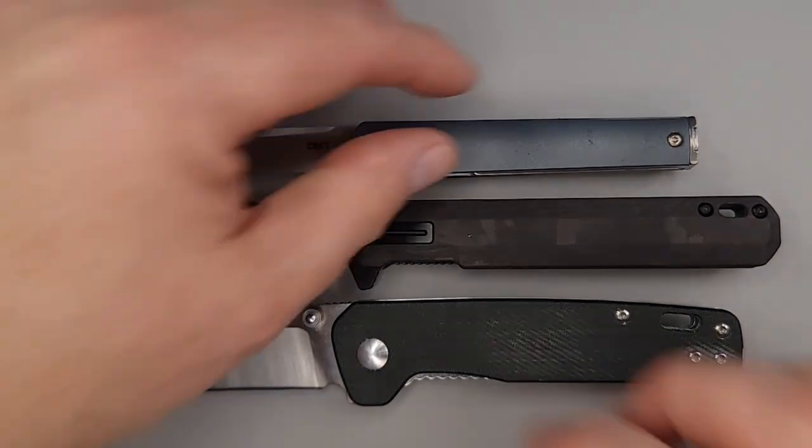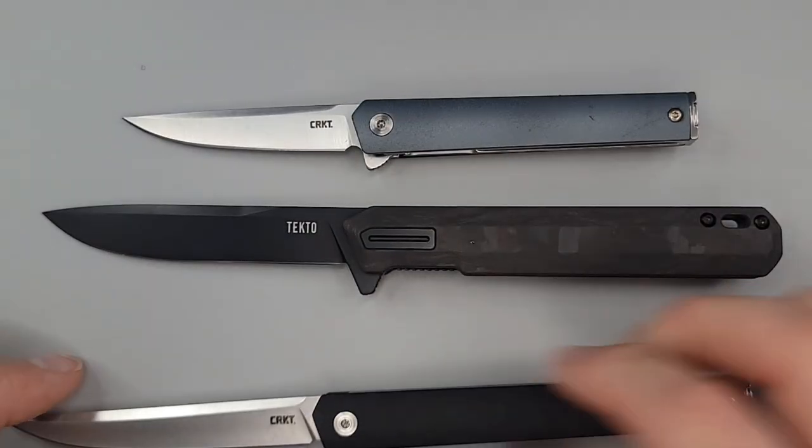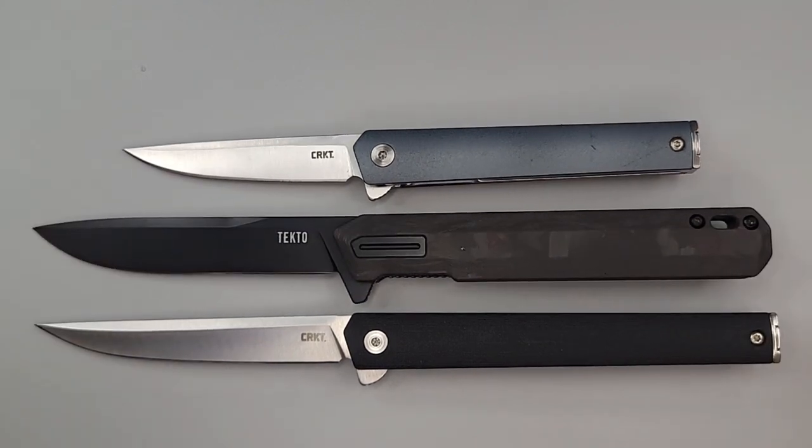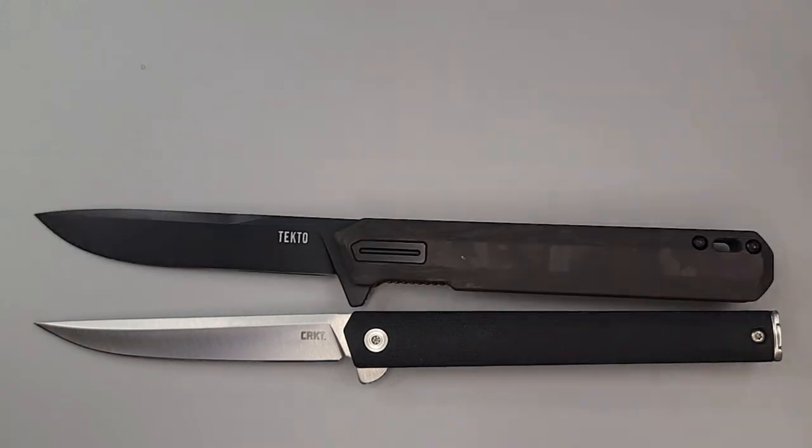I will have links to all of these knives in the description if you want to check them out and get the correct name, because I think it's called the mini, pretty sure it is. But if you actually want to see the mini up with the CEO, there's the CRKT CEO, there's the mini. Now you see what we're stepping in. Can you smell what we're stepping in? It's pretty much the same length as the CEO.